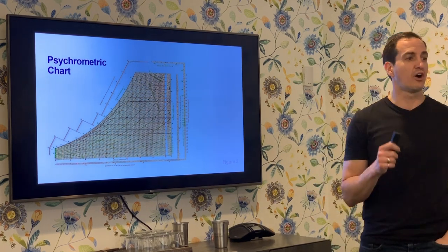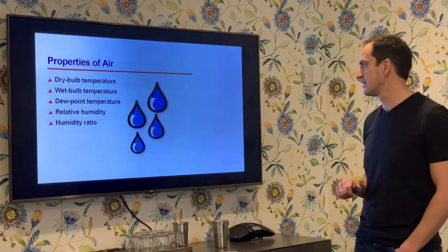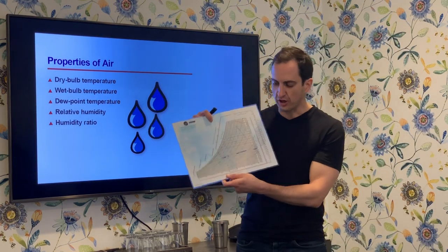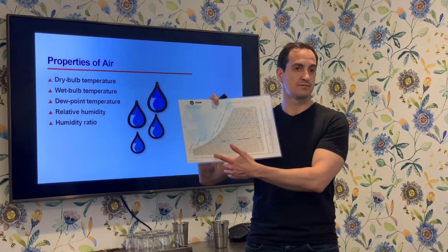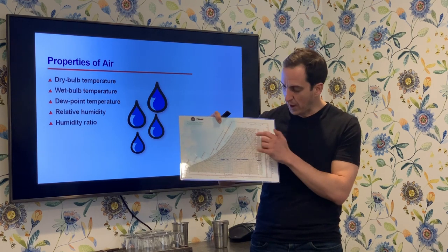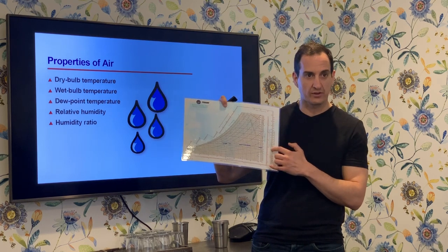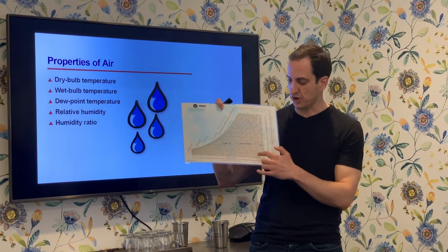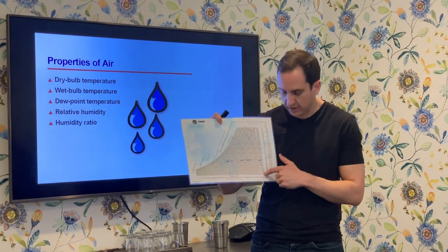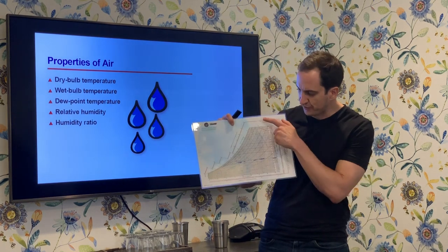You should all have a handy-dandy psychrometric chart in your hands. Let's talk about some of the different axes. Along the bottom you'll find the dry bulb temperature. You'll find the wet bulb temperature as a diagonal from the bottom right-hand corner to the top left-hand corner in green lines. You'll find the dew point temperature as an axis along the y-axis on the right-hand side of the chart.